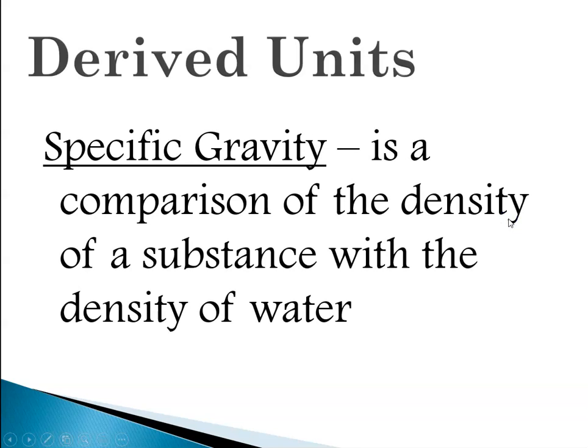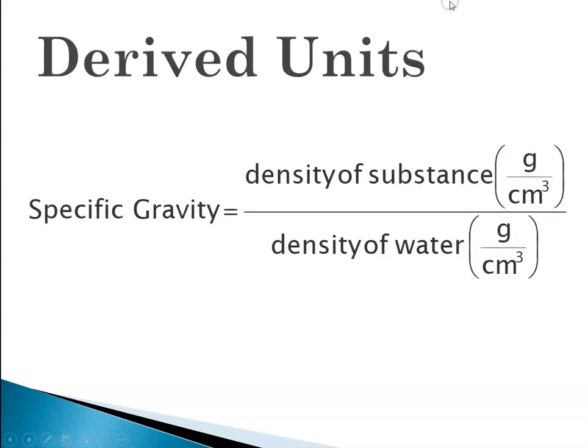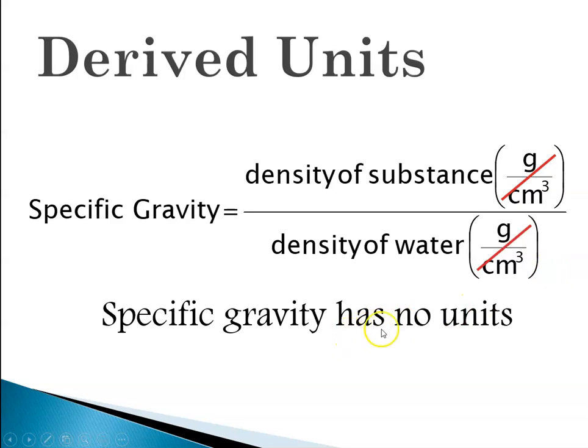Another unit that we talk about is specific gravity. One more derived unit. And specific gravity is any time you're comparing the density of a substance to the density of water. So let's look at that. So for the specific gravity of a substance we would take the density of that substance, which is in grams per cubic centimeters, and compare that to the density of water, again grams per cubic centimeter. So you'll notice that those two units would cancel out and so specific gravity is something that has no units.